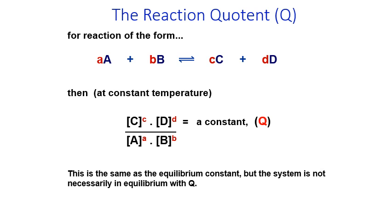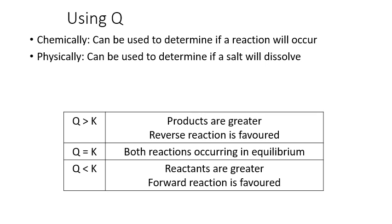The reaction quotient Q uses the same expression as Kc but with non-equilibrium concentrations. At constant temperature, Kc equals Q only when the system is at equilibrium. Q can determine whether a reaction will occur chemically, or physically — for example, whether a salt will dissolve. If Q is greater than K, products are in excess and the reverse reaction is favoured. If Q equals K, the system is at equilibrium. If Q is less than K, reactants are greater and the forward reaction is favoured.